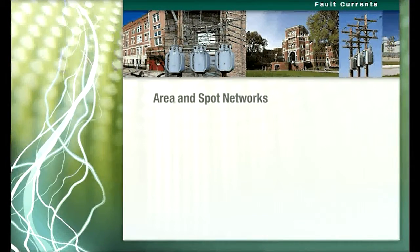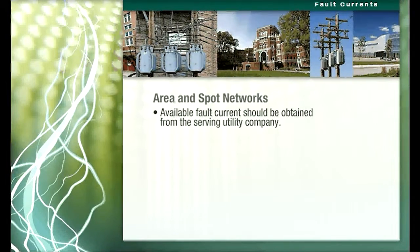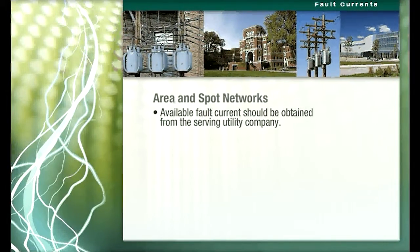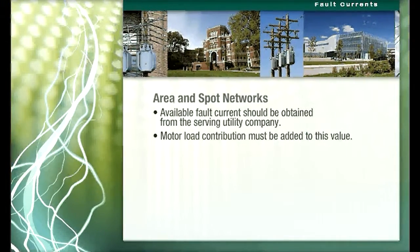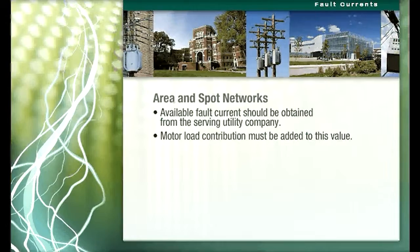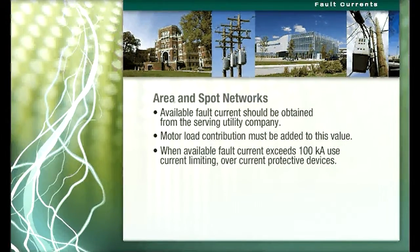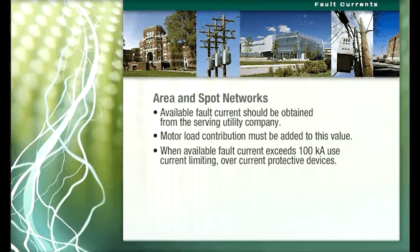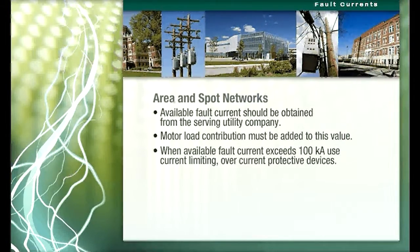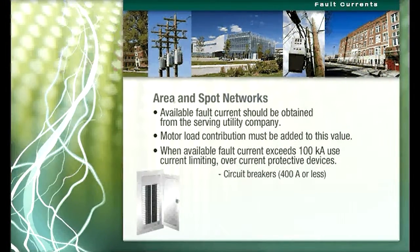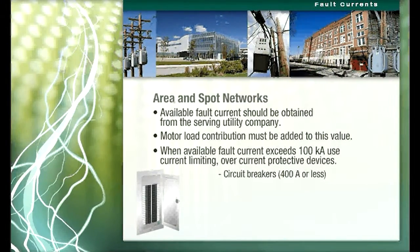For services derived from area and spot networks, the available fault current at the service should be obtained from the serving utility company. Keep in mind that motor load contribution must be added to this value. For area and spot network services, the available fault current can exceed 100 kA. In these cases, it is common practice to apply current limiting overcurrent protective devices. These devices can be circuit breakers when the rated current is 400 amps or less.